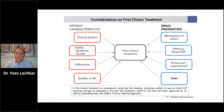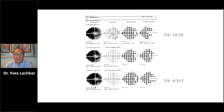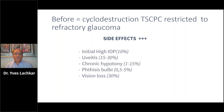In first-choice treatment, we have many parameters to decide: mechanism of action, target IOP, cost, quality of life, endurance, clinical picture, and so on. But we must not wait and wait until very poor vision and then refer the patient to a glaucoma specialist. There are too many patients with poor vision referred too late.